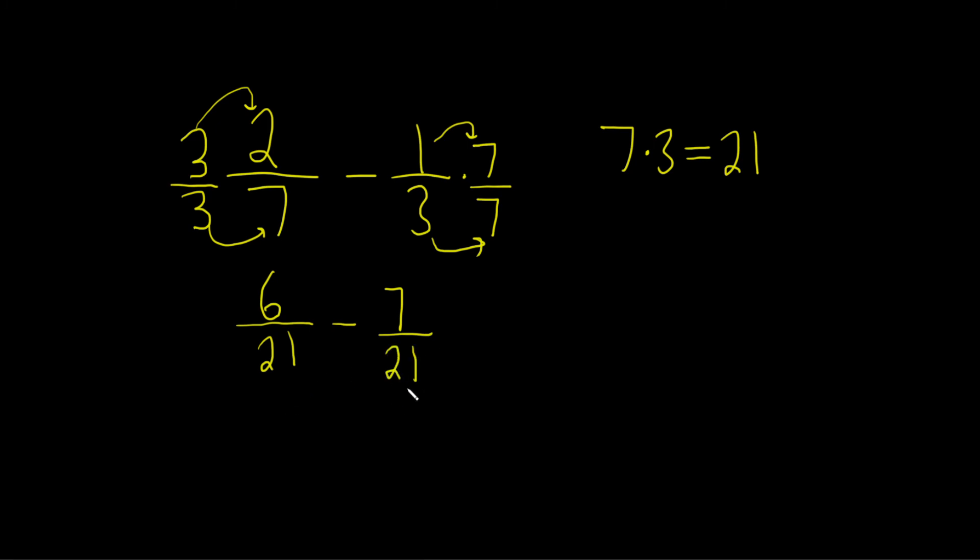So now we have the same denominator. So now we can actually just subtract the numerators. So 6 minus 7 that's going to be equal to negative 1. And then we just keep our denominator which is 21.